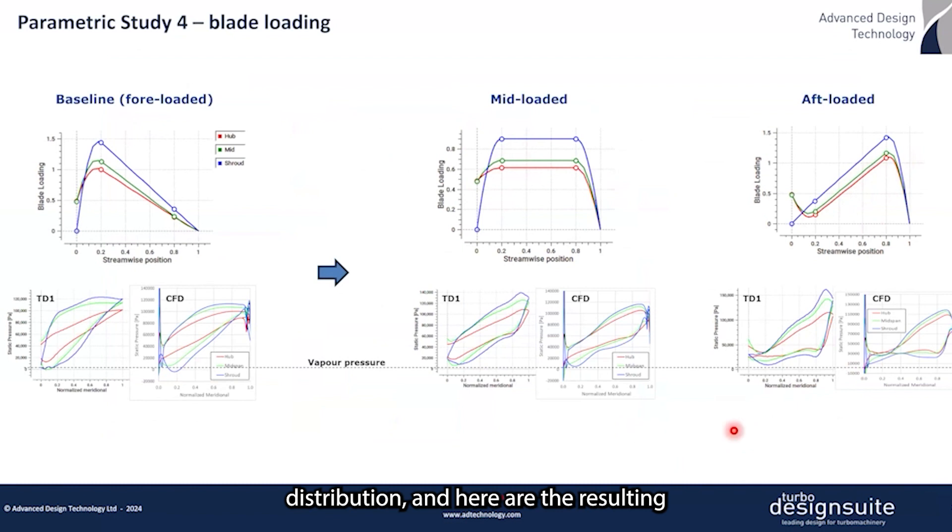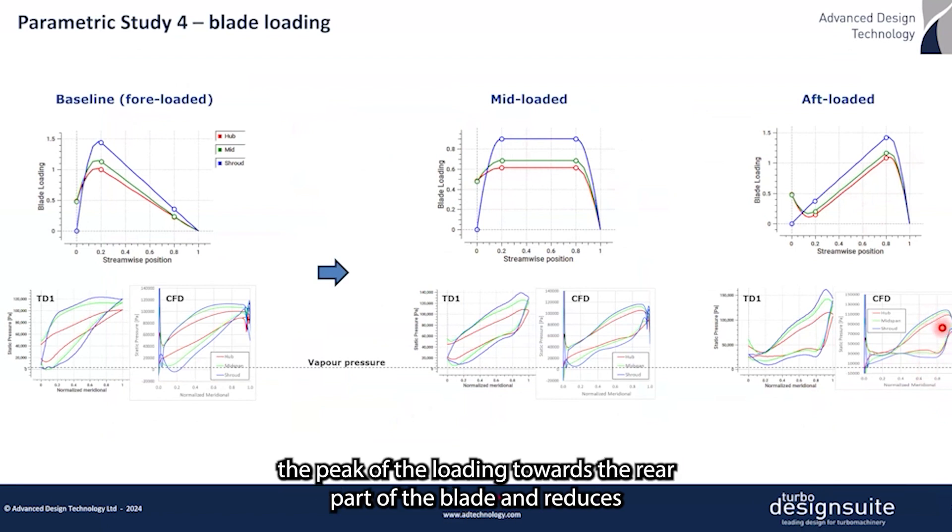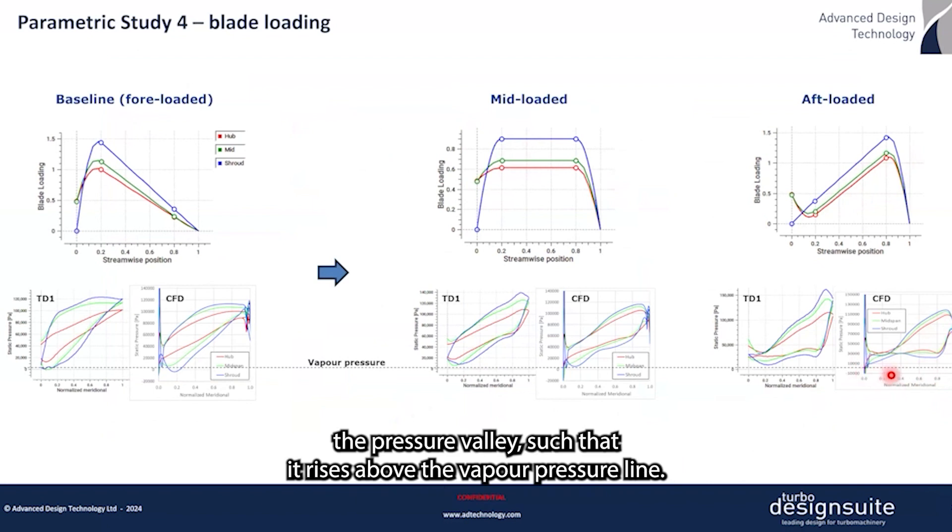Here are the resulting blade loading plots from CFD and TD1. Both clearly show that aftloading the blade shifts the peak of the loading towards the rear part of the blade and reduces the pressure value such that it is above the vapor pressure line.